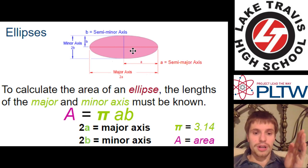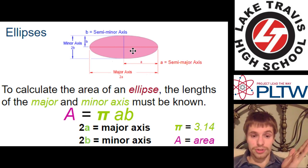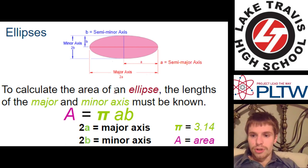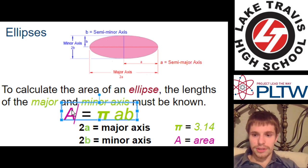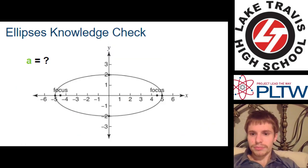You can remember, a is the longer one, b is the shorter one. a comes first in the alphabet, b comes second. So using those a and b measurements, which is again, the semi-major and semi-minor axis, you have the area right here. Write this down in your notebook. A is pi times a times b.